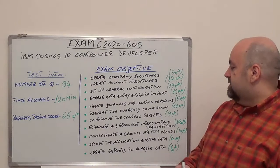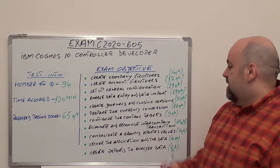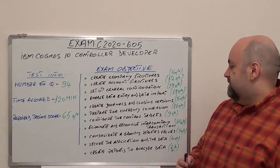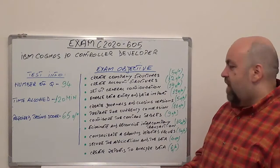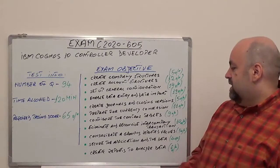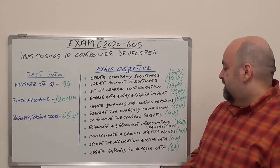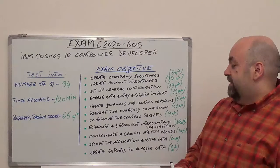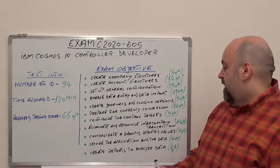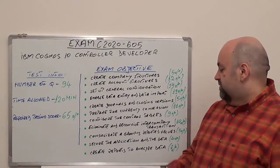Eliminate and reconcile intercompany transaction, 10% of the total questions. Consolidate a group report value, 5% of total questions. Secure the application and the data, 4%. And the last one is create reports to analyze data. 6% of total questions.